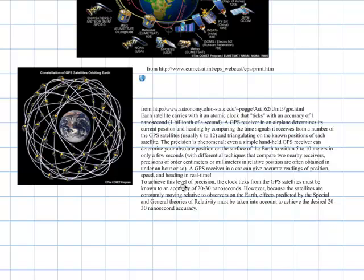And then to achieve this level of precision, the clock ticks from the GPS satellites must be known to an accuracy of 20 to 30 nanoseconds because the satellites are constantly moving relative to observers on the earth. Effects predicted by the special and general theory of relativity must be taken into account to achieve the desired 20 to 30 nanosecond accuracy. And so with GPS satellites, we're able to determine our position within just a few meters or feet.